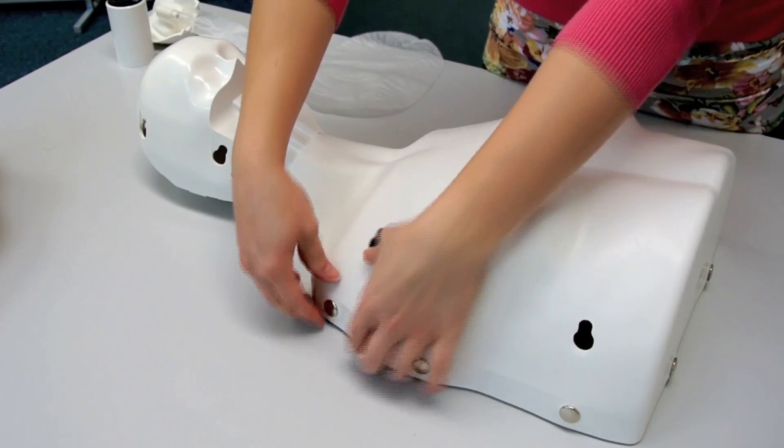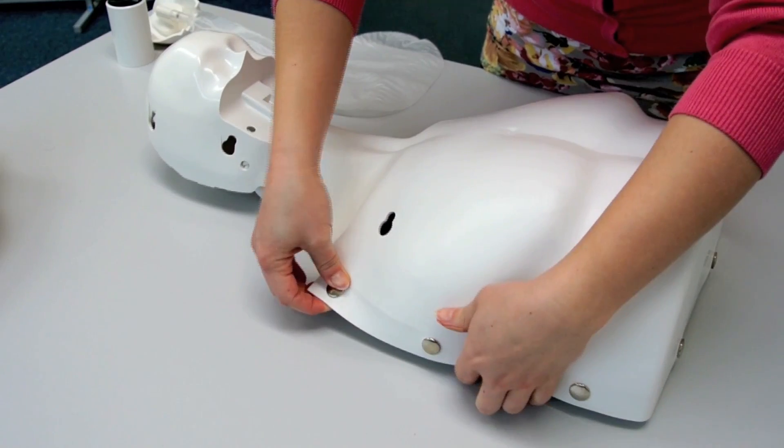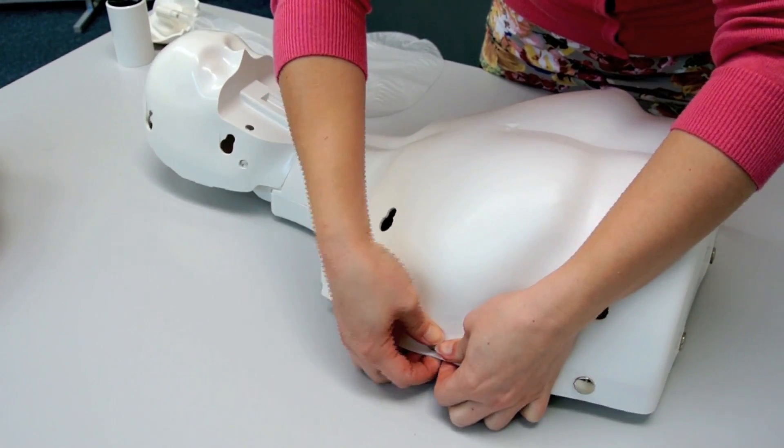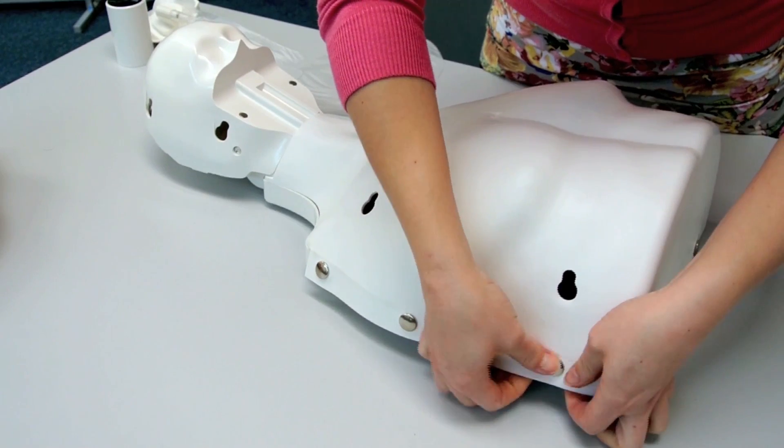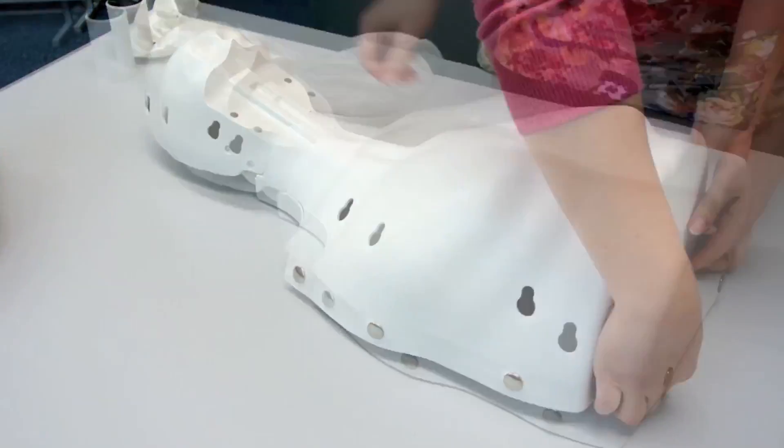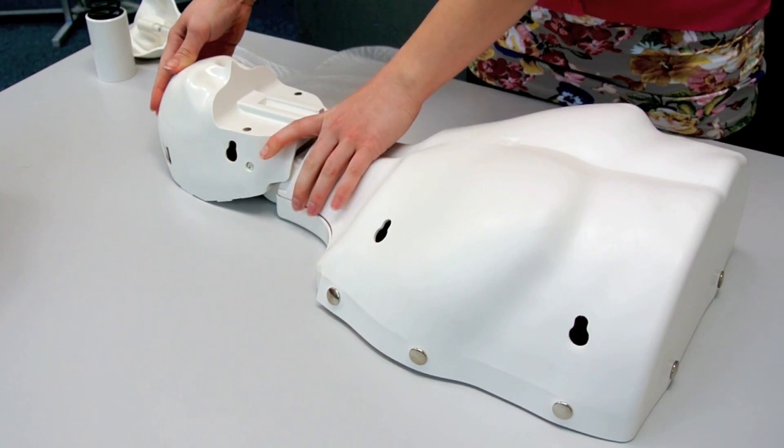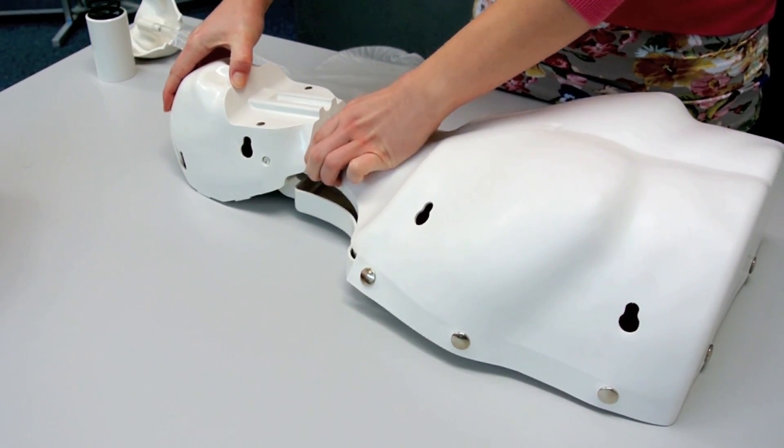Changing the compression spring allows for child mode. Once the thorax skin, face skin, and lung bag have been removed, the thorax cover can be detached and removed. Tilting the head back will make it easier to remove the thorax cover.